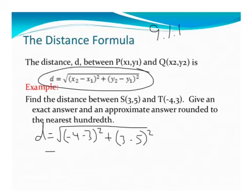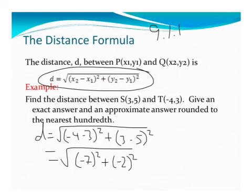Let's simplify this now. What I'm going to have is the square root of negative 7 squared, plus negative 2 squared. Well, negative 7 squared is positive 49, plus negative 2 squared is positive 4. So I end up with the square root of 53.